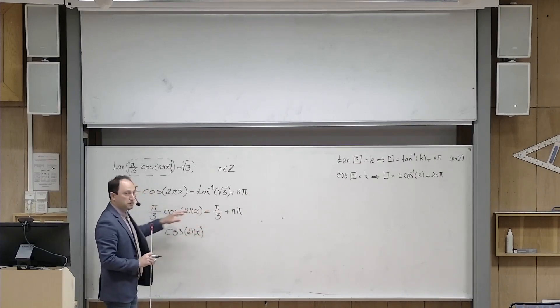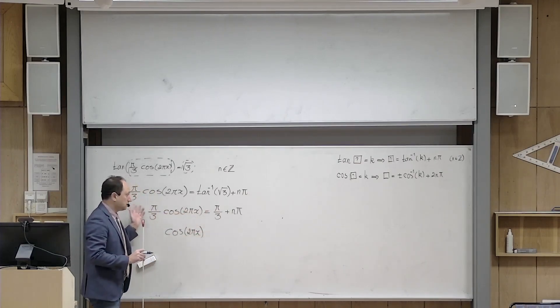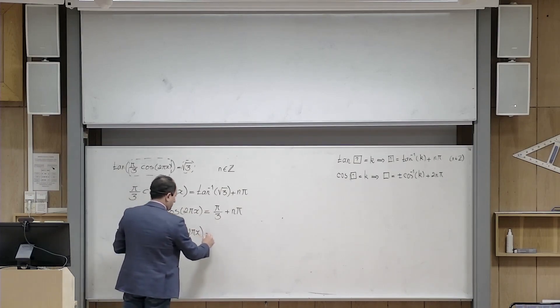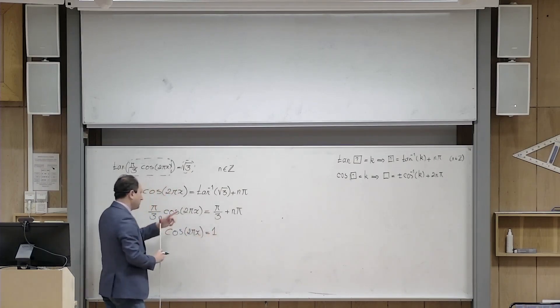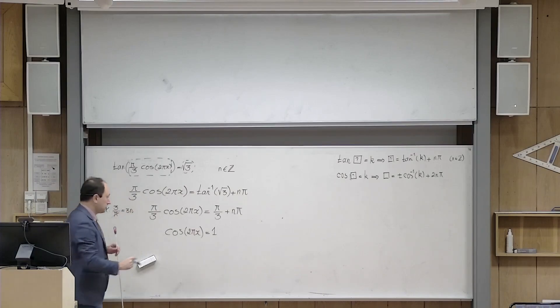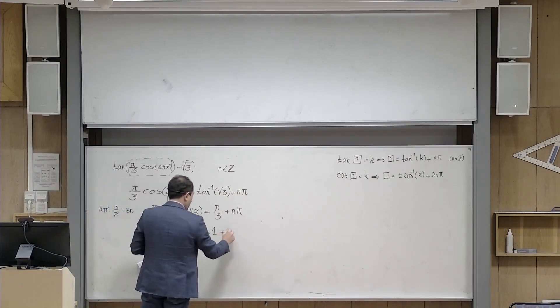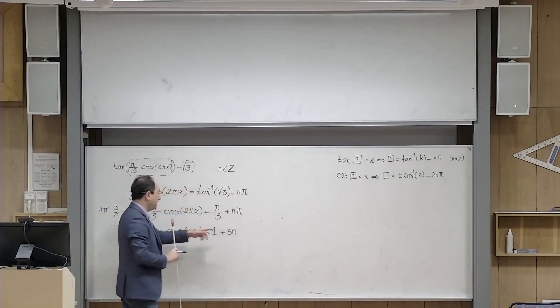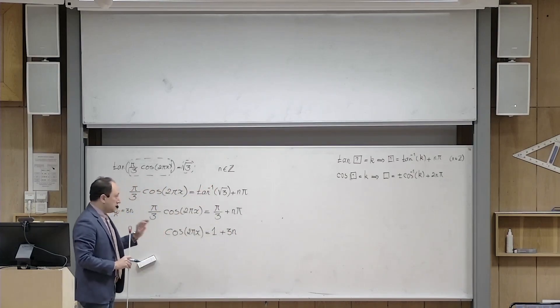If I multiply this by 3 over pi, this becomes 1, because they are reciprocal to each other. If I multiply the last term n pi by 3 over pi, then this pi and that pi are cancelled, and I get 3 times n. So the next one is 3 times n. Remember, n is an integer.